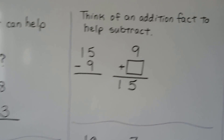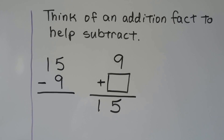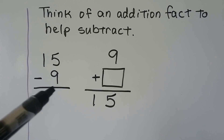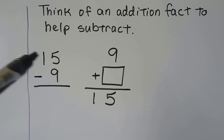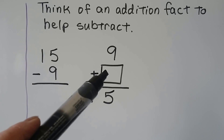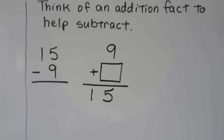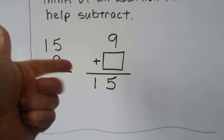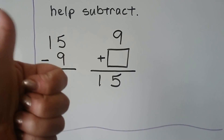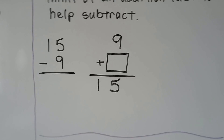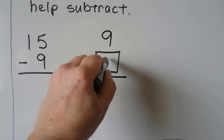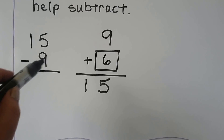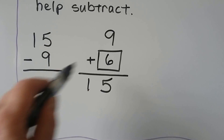Think of an addition fact to help subtract 15 minus 9. We can think 9 plus some number is equal to 15. We can start at 9 and count on: 9, 10, 11, 12, 13, 14, 15. That was 6. So 9 plus 6 is equal to 15, which means 15 minus 9 is equal to 6.